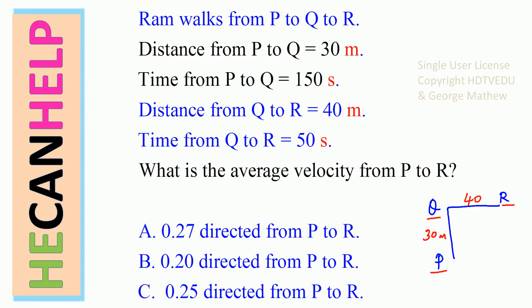Is it A: 0.27 directed from P to R? Is it B: 0.20 directed from P to R? Or is it C: 0.25 directed from P to R? Assume 90 degrees.